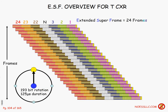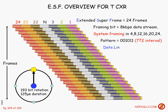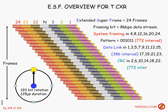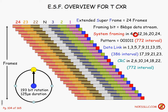This is known as Extended SuperFrame, and it uses 24 frames — the concept is still the same but it's a much better system. The hardware got better, the clocks got better, everything got better. Instead of 12 frames, they used 24. System framing only occurs in frames four, eight, twelve, sixteen, twenty, and twenty-four.